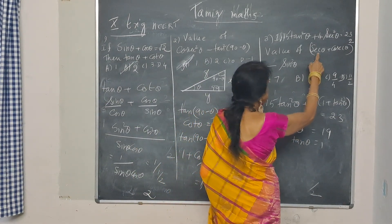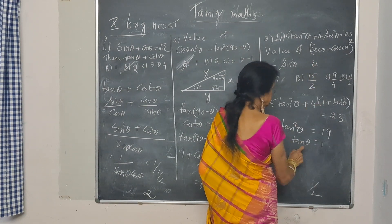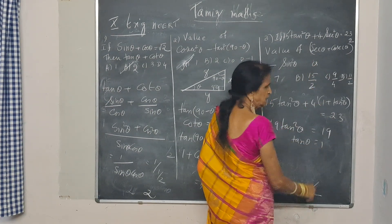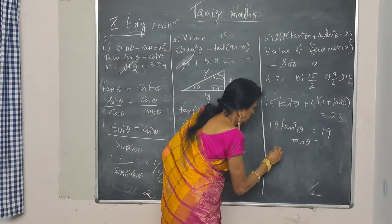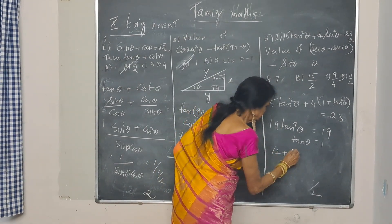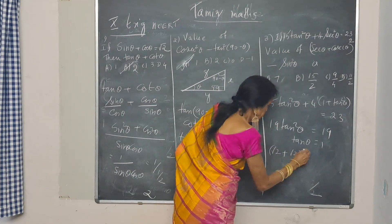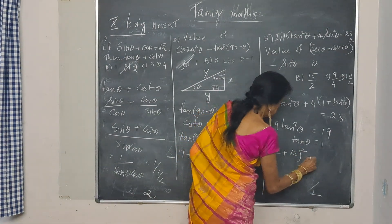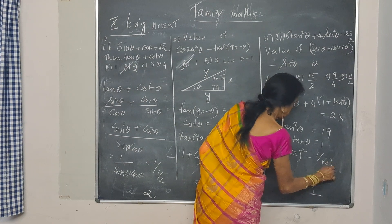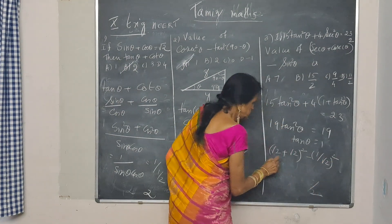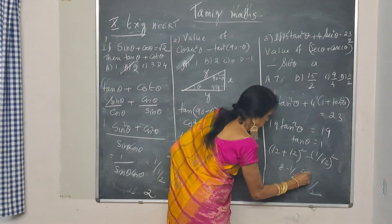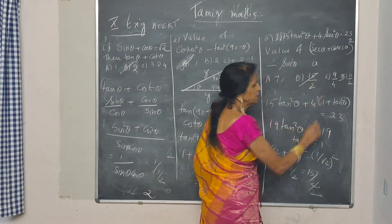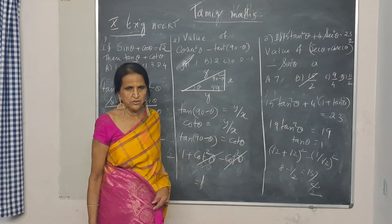Now, you come here. Secant theta. Tan theta is 1. That means theta is 45 degrees. What is secant theta? Root 2. And what is cosecant theta? Root 2 whole square minus 1 by root 2 whole square. This is 2 minus 1 by 2, which is 15 by 2. So, I hope all the problems are clear for you.